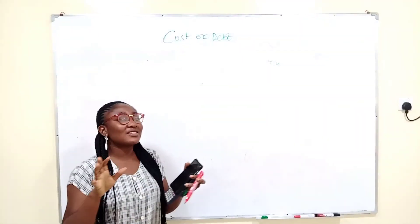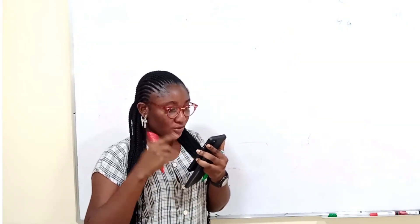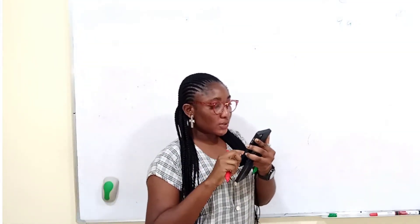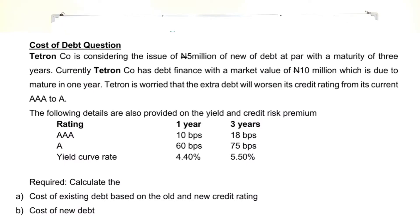So let's solve another question. Because you know all these ones have been solved. It has only tested the dividend valuation model. So let's test the capital asset pricing model. This question I'll put it on the screen. Tetron Co. is considering the issue of 5 million new debt at par with the maturity of 3 years. Currently, Tetron Co. has a debt finance with a market value of 10 million. So this is its current debt. The company is here. It has debt currently, and it is due to mature in 1 year. This one will mature in 1 year, and they still want to collect 5 million. They will mature in 3 years from today.